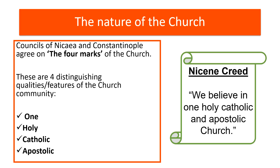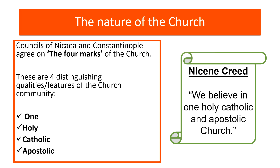This leads us into the nature of the church. During a couple of councils — the Council of Nicaea and Constantinople — the church agreed on four marks of the church, four features or qualities that they felt the church community had. These are: one, holy, Catholic, and apostolic. At a very base level, you need to be familiar with the Nicene Creed, which identifies these. It says: we believe in one holy, Catholic and apostolic church. You'll now need to break down each of those qualities.